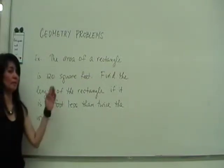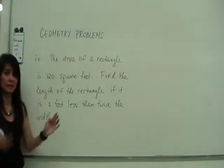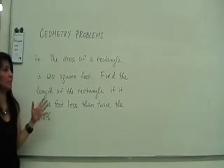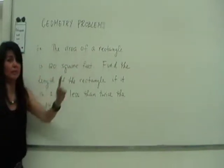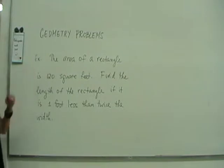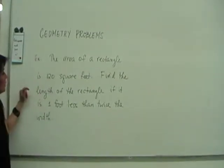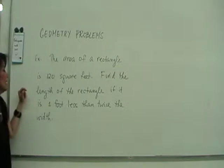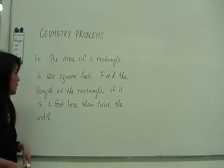Next type of problem we want to talk about are geometry problems. There's a ton of them, but let's focus today on the rectangle. We have a rectangle here. For my first example, I have here the area of a rectangle is 120 square feet. Find the length of the rectangle if it is one foot less than twice the width.